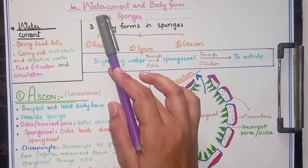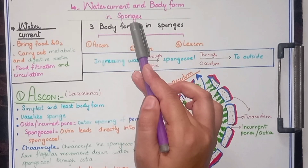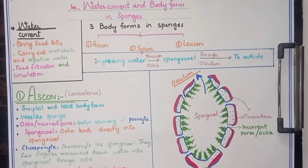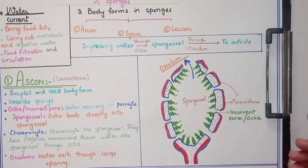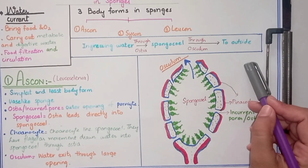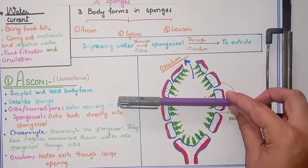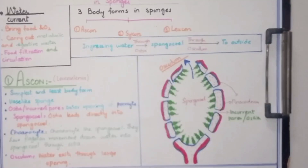Today we are going to talk about a new topic: water current and body forms in sponges. Sponges belong to phylum Porifera, and members are mostly marine except a few like Spongilla which live in freshwater. In the marine environment, two types of water movement are observed: vertical water movement in a straight form, and horizontal water movement, which is responsible for the water current mechanism in sponges.